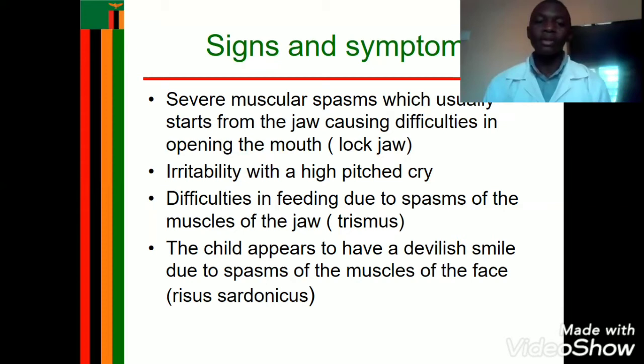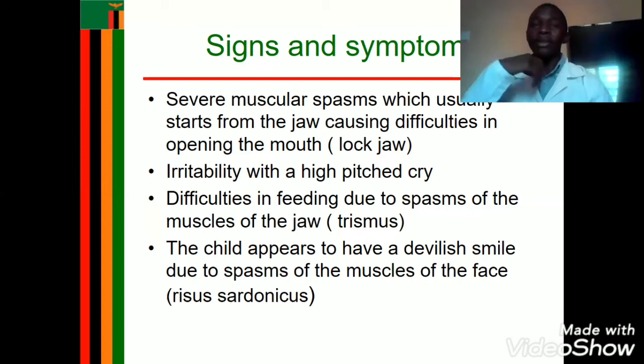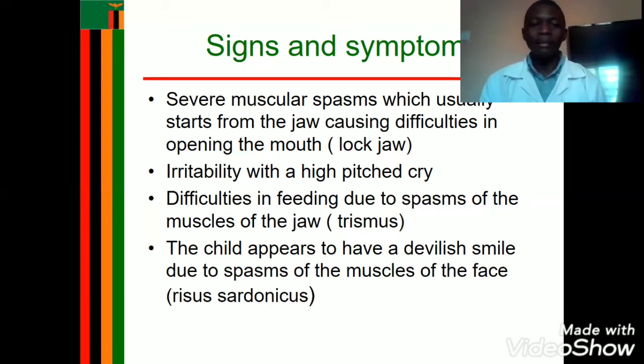Because of jaw muscle spasms, the child will have difficulty breathing. A key physical diagnostic tool for tetanus is the spatula test: when you press a spatula behind the tongue, the normal response is to vomit, but in a child with tetanus, the child will bite the spatula because trismus locks the jaws. This distinguishes tetanus from other conditions.